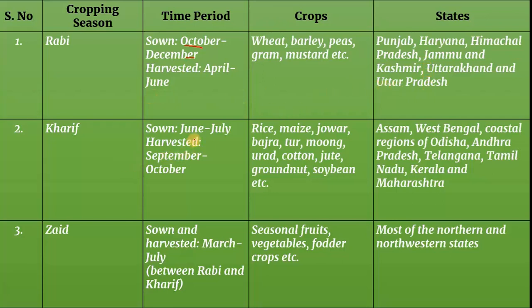The Kharif season is sown in June-July and harvested in September and October. Kharif crops include rice, maize, jowar, bajra, tur, moong, urad, cotton, jute, groundnut, soybean, etc. These are the major crops of the Kharif season.